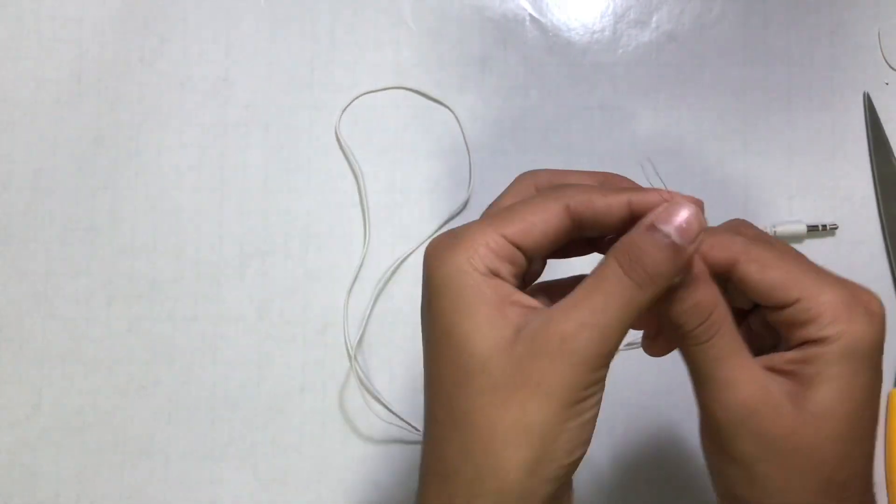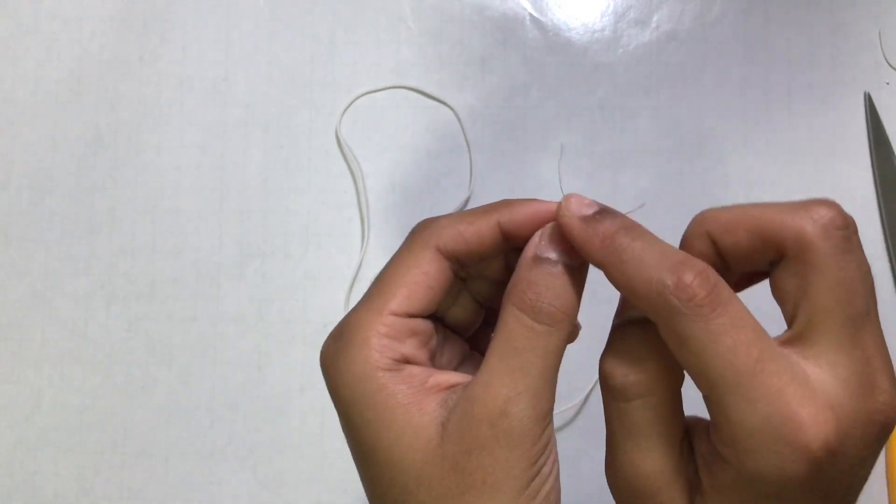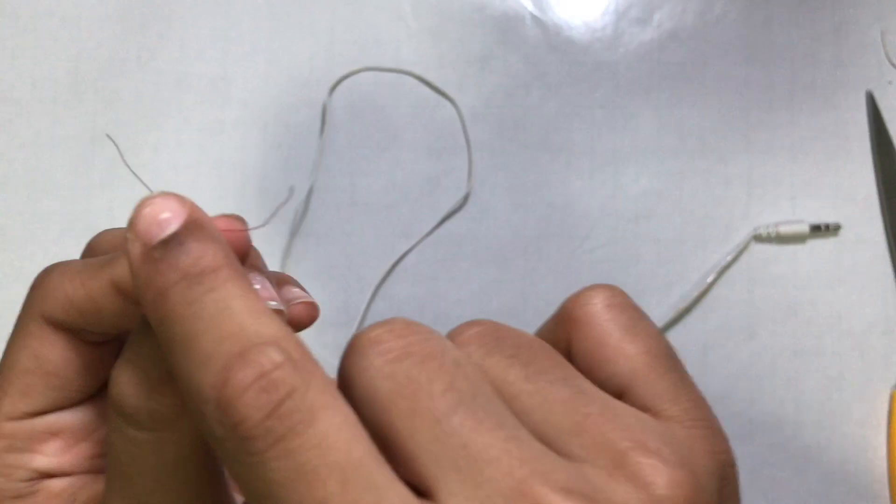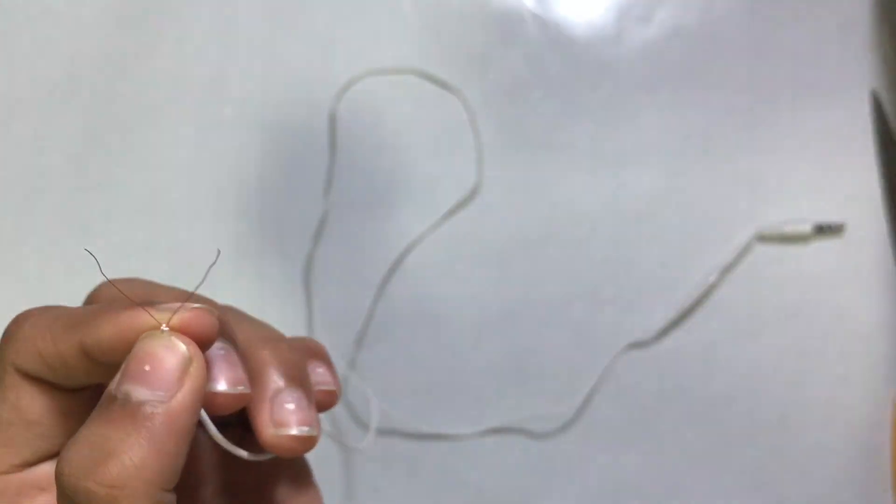Take your headphone jack and cut off the ends. Now you get two wires like this. One wire is insulated and one wire is not.